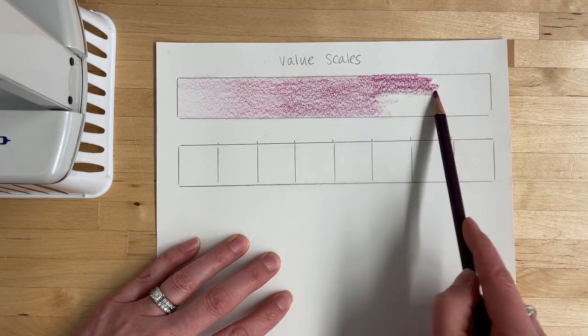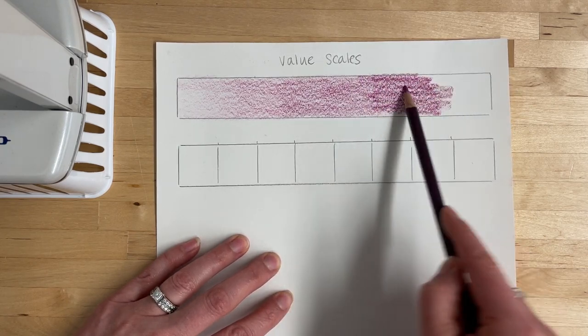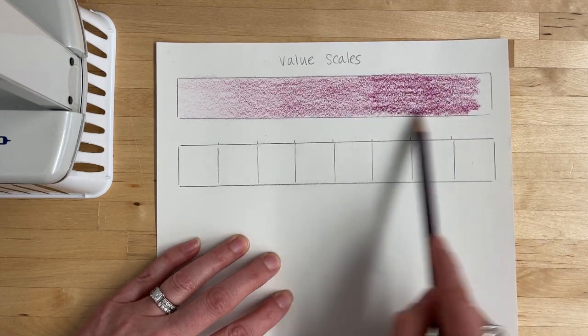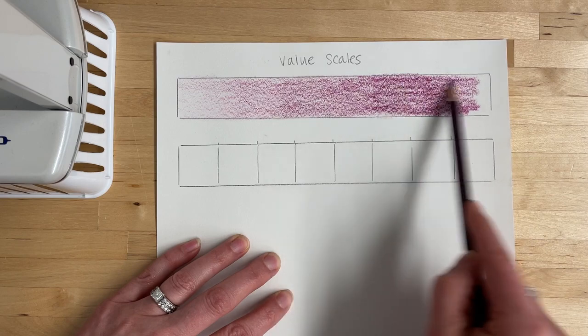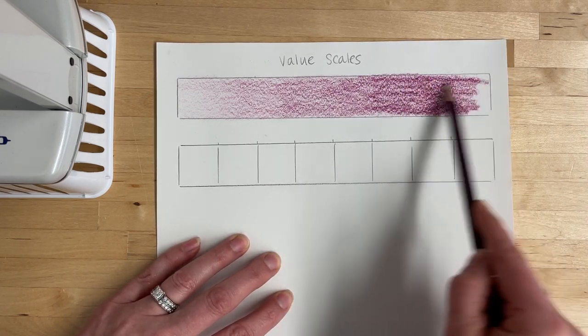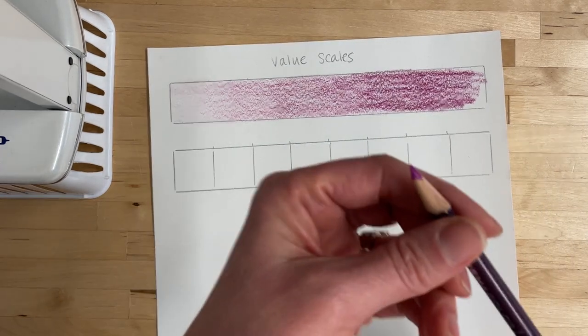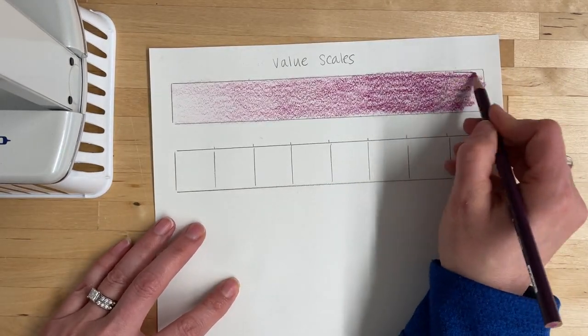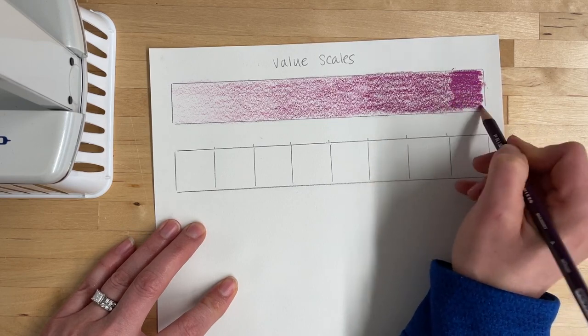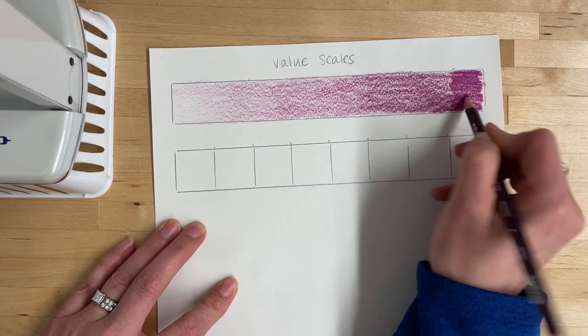I'm now working in my dark to very dark values. The overhand grip should work just fine for the majority of the value scale except for at the very end. Because we're using these nice Prismacolor pencils, you can put a lot of pressure at the very end to get the darkest value and to really get that saturated color on your paper.